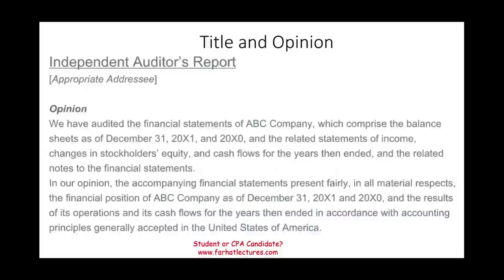The best way to review this report is to actually look at one. The first component is the title: Independent Auditor's Report. When we audit a company, we have to be independent, because without independence the audit report is useless. An opinion from someone who is biased or related to the company doesn't carry value. That's why we use the word independent, and it must appear in the title.